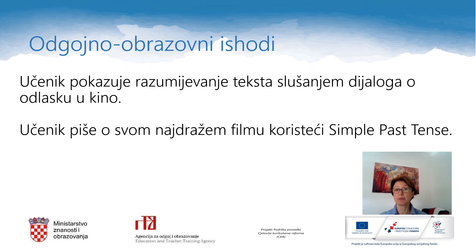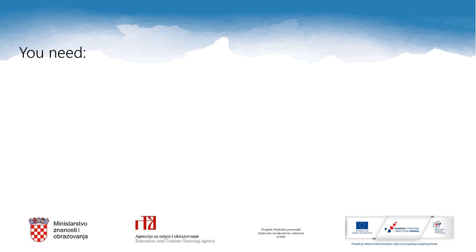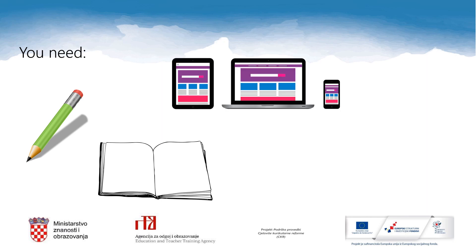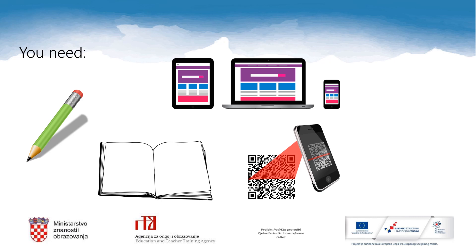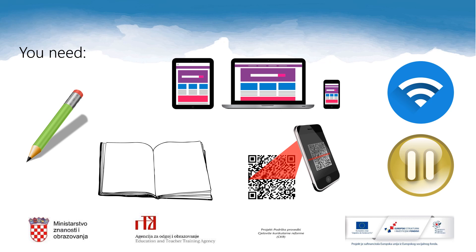By the end of this lesson you will be able to show understanding of the text by listening to the dialogue about going to the cinema, and you will be able to write about your favorite film using the simple past tense. For today's lesson you will need a pencil, a notebook, a laptop, tablet or a smartphone, a QR code scanner, and internet connection. When you see this icon it means that you can pause this lesson and take your time to do your tasks properly.